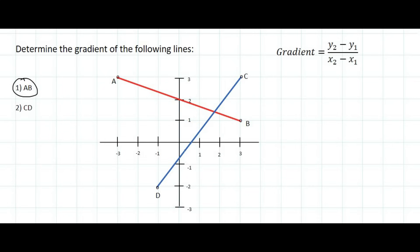So we're going to find the gradient between A and B. I'm just going to call A point number 2 and B point number 1 — it really doesn't matter. Then what we do is we use the formula as we see it. So it says that we must take the y value of point number 2, which is 3. Then the formula has a minus, so we put a minus. Then it says the y value of point number 1, which is 1. Then the x value of point number 2 — so we go to point number 2, which is A, and we look for its x value, which is minus 3.